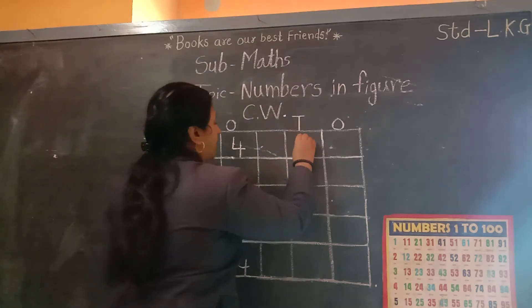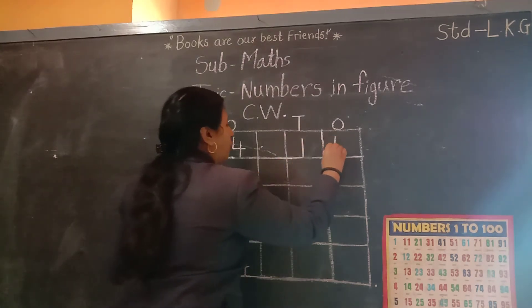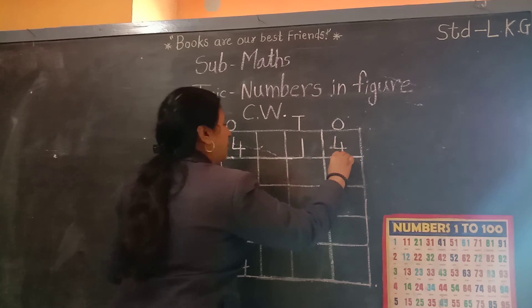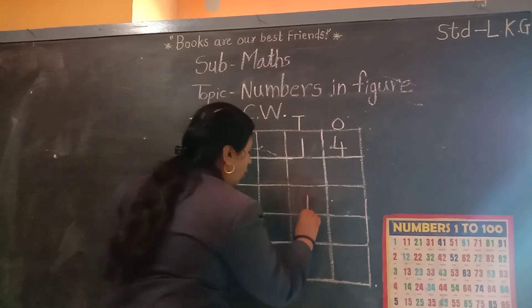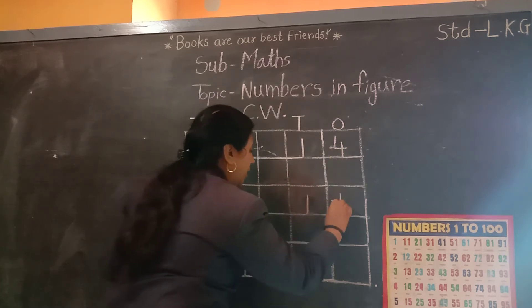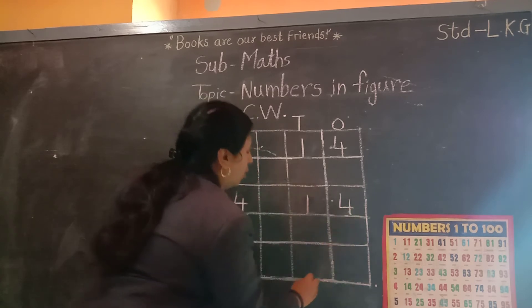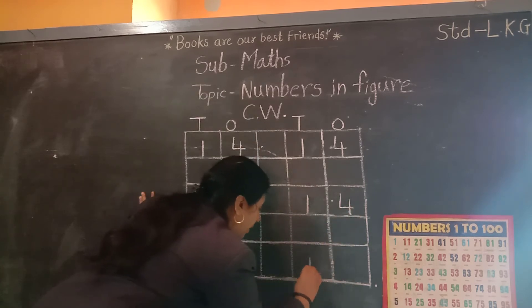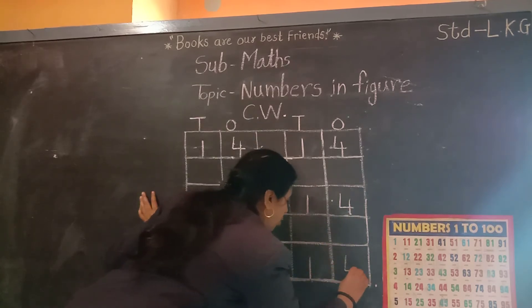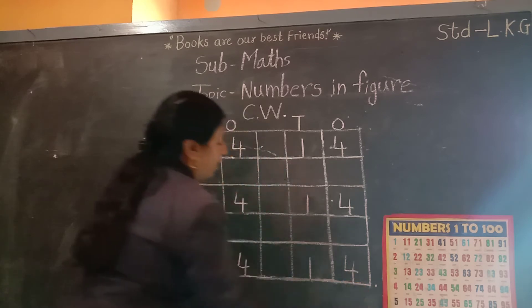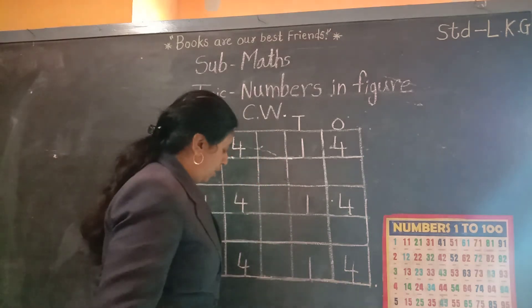Once again, look here: 1, 4, 14. While writing, you also have to say and write: 1, 4, 14.